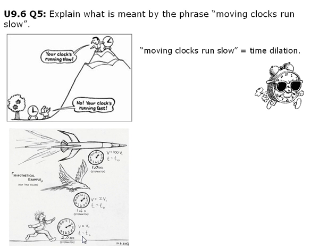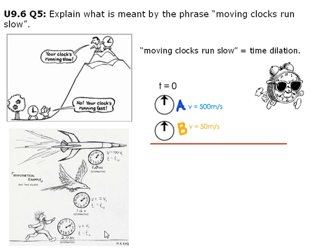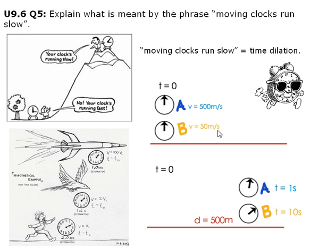The next image will show this process. Here, we have A in a moving aircraft and B on the ground. A is traveling 10 times faster than B. If they both travel 500 meters, it would take A 1 second as measured by A's clock, but for B it would actually take 10 seconds.